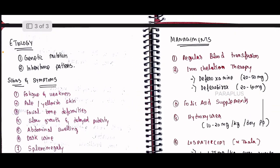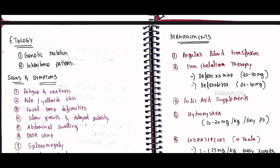The etiology is genetic mutation. Signs and symptoms include fatigue and weakness, pale or yellowish skin color, facial bone deformities, slow growth or delayed puberty, abdominal swelling, dark urine, and an enlarged spleen. Complications include severe anemia.